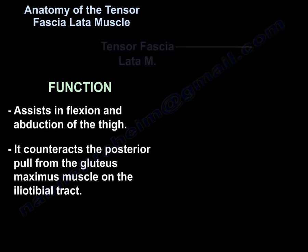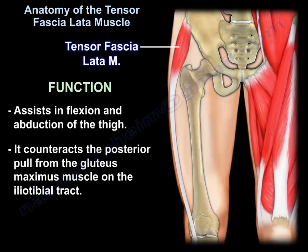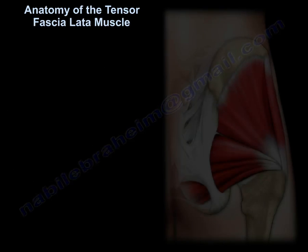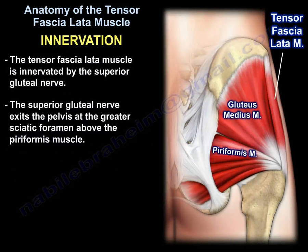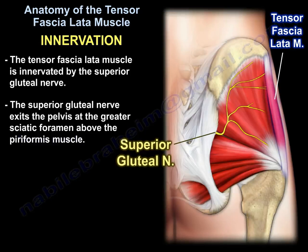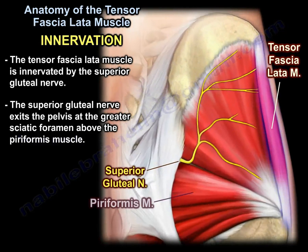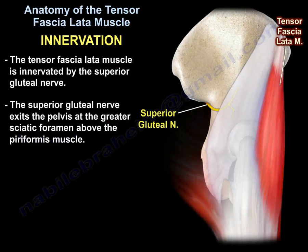The tensor fasciae latae muscle assists in flexion and abduction of the thigh. It counteracts the posterior pull from the gluteus maximus muscle on the iliotibial tract. The tensor fasciae latae muscle is innervated by the superior gluteal nerve, which exits the pelvis at the greater sciatic foramen above the piriformis muscle.